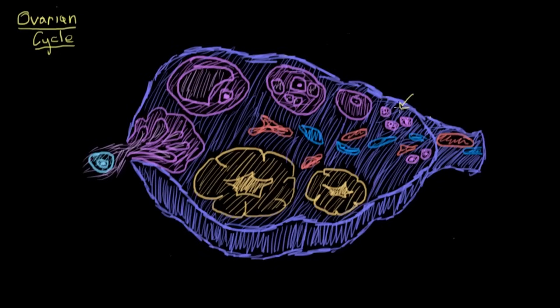Basically, the primary oocytes that are destined to be ovulated will develop in the ovaries, complete meiosis I just before ovulation, and then they'll be ejected out of the ovary as a secondary oocyte to be picked up by the fimbriae and swept into the uterine tube to hope for fertilization.